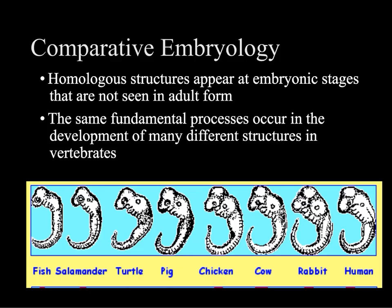We can also compare embryos — this is comparative embryology. When we look at the embryonic stages, the earliest stages of life of different organisms, they almost look the same. We also have things called Hox genes, which help determine where your head develops, where your legs develop, etc. Some of these homologous structures that appear in the embryonic stages aren't seen in adult forms. As scientists have been able to study embryos at different stages across different organisms, they've seen these similar stages — the same things are happening in the development of many different structures, especially in vertebrates. If you looked at pictures of these embryos unlabeled and I said find the human, you probably wouldn't be able to do it.